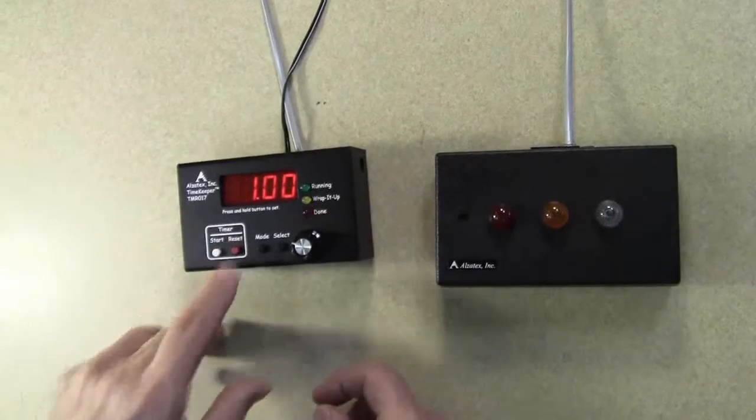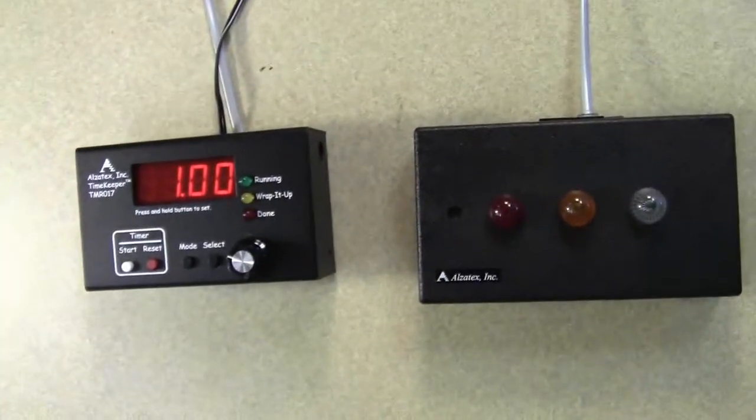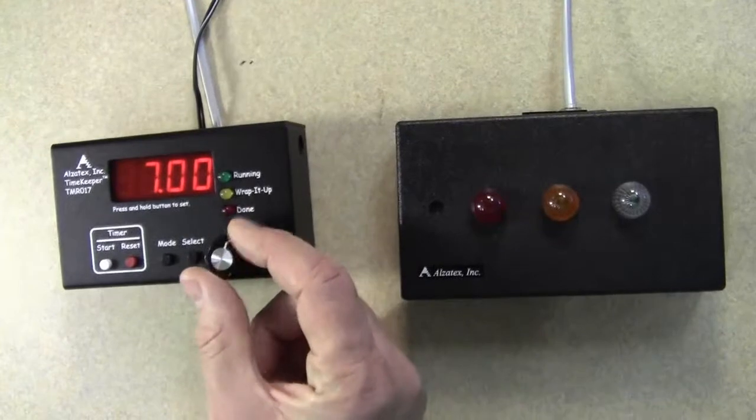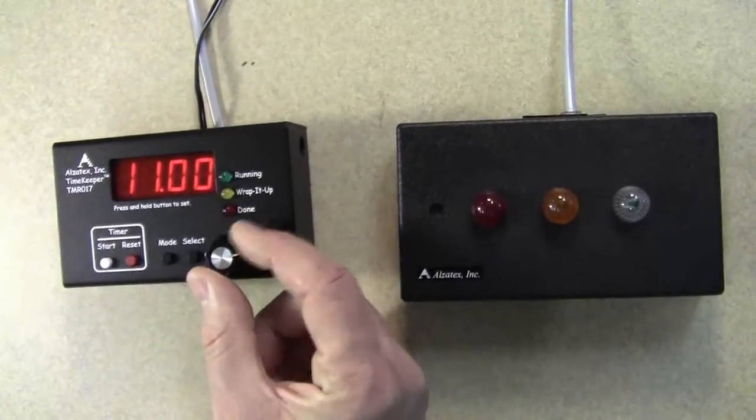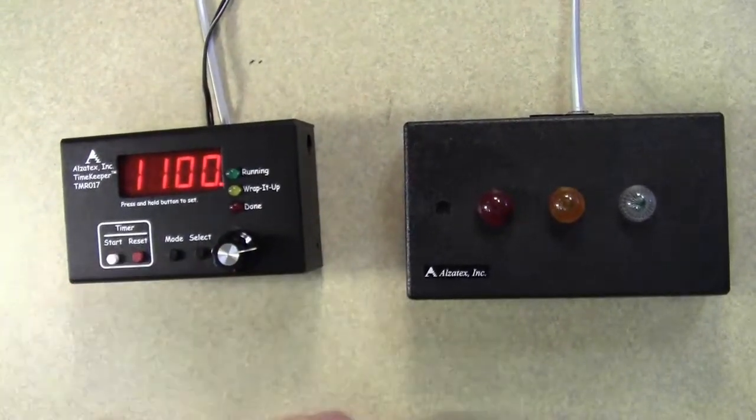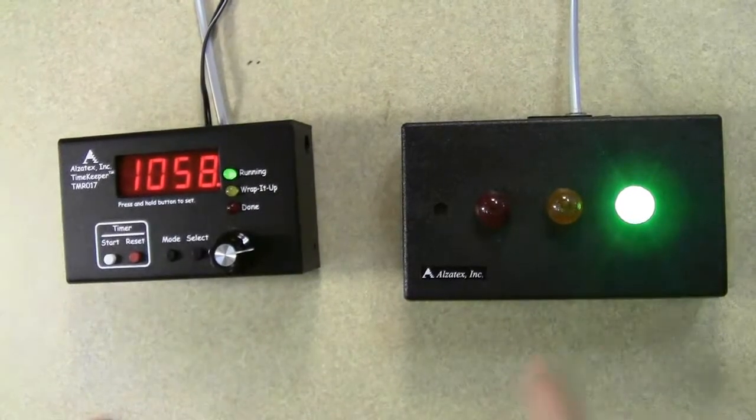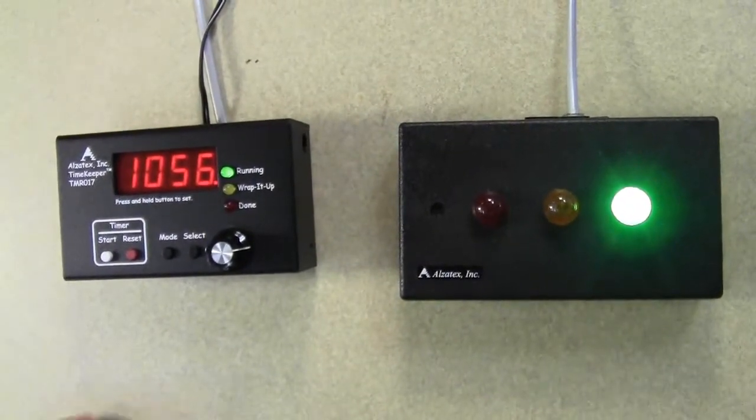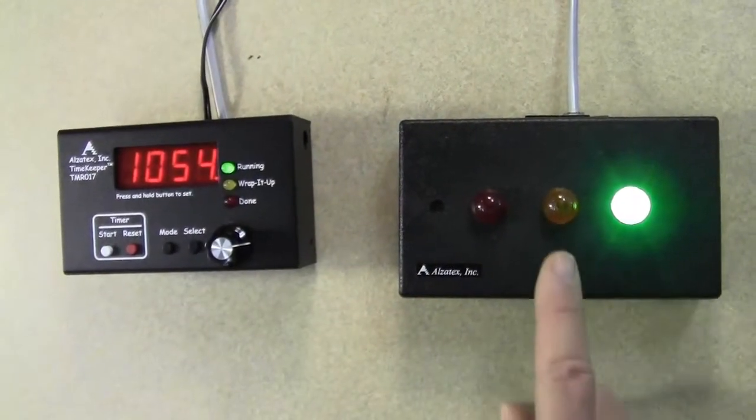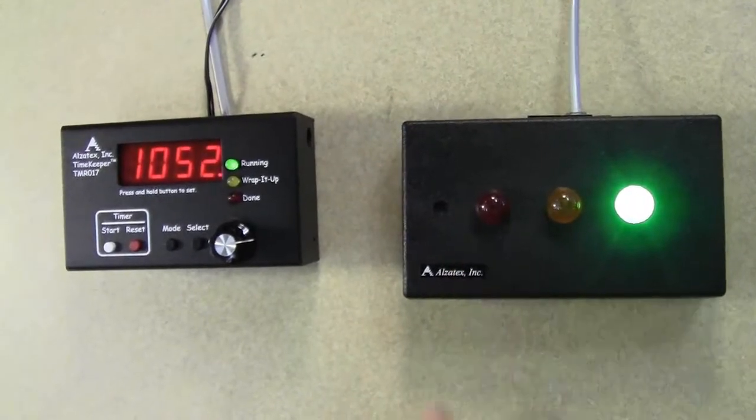Now I'm going to press reset. You'll notice the time shows one minute. I can turn the knob to the number of minutes that I want. Let's say I want 11. I press start, and it starts counting down. The green light turns on. Then when it gets down to two minutes, it's going to turn yellow, and then eventually turn red when it gets to zero.